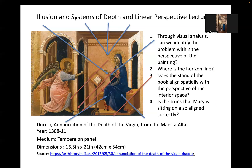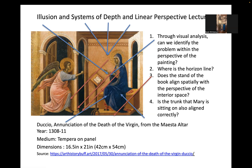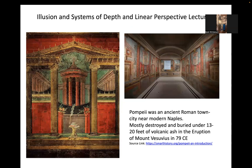Duccio's Annunciation of the Death of the Virgin, part of the Maesta altarpiece — a large tempera painting on panel done in 1308 to 1311 — is an interesting example of repeated motifs but also clear mistakes. Duccio is trying to make a believable three-dimensional space, but look at the chest Mary is sitting on and the book stand — none of it is spatially aligned with the perspectival space of the architecture. They almost seem collaged into the painting.